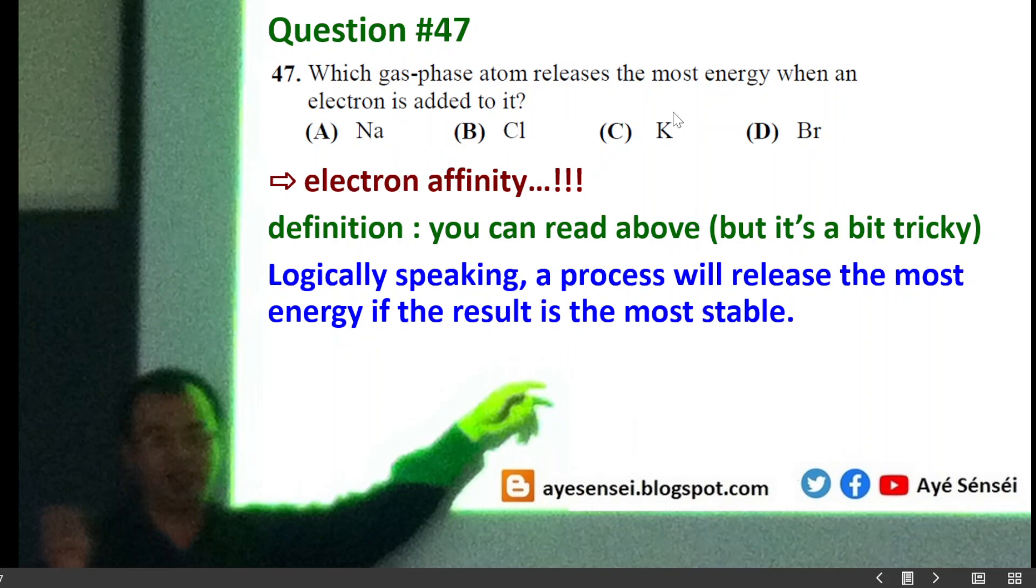Well, logically speaking, a process will release the most energy if the result is the most stable. So we need to figure out which of these four atoms will produce the most stable result. Speaking about receiving an electron, this will make an atom become negatively charged. So this negatively charged particle we call it as an anion.